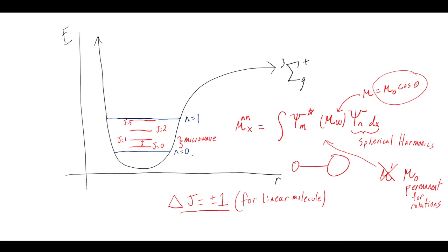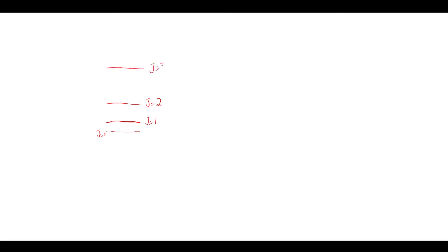You might notice that when I draw the rotational states, they are getting further apart. As I think about the spacing from J=0 to J=1, to J=2, to J=3, and so on, the spacing between these levels is changing. This ΔE is different from the next ΔE. The energy is ℏ² / (2μR₀²) · J(J+1), so let's derive why this spacing increases.